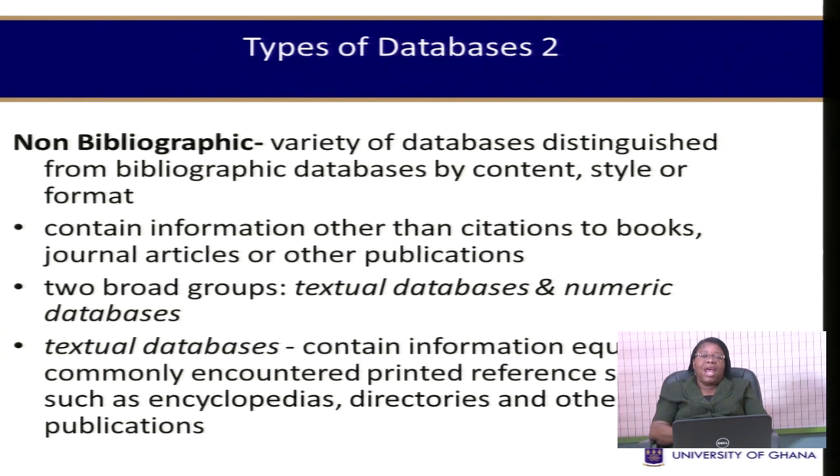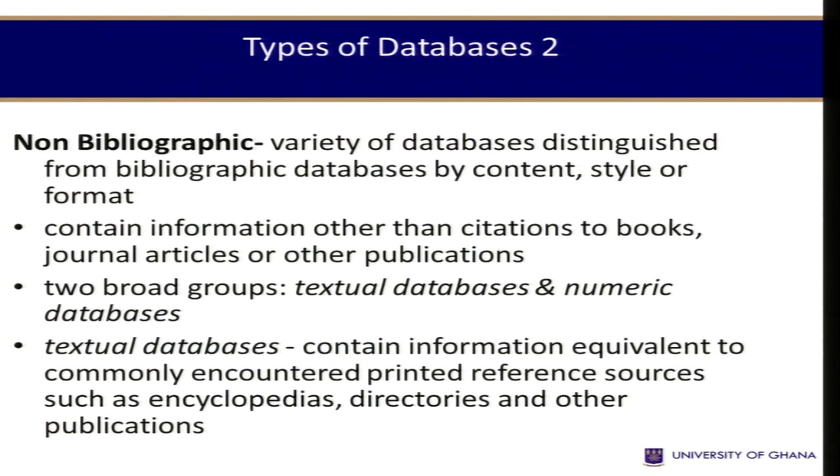A non-bibliographic database is a variety of databases distinguished from bibliographic databases by content, style, or format. It contains information other than just citations, providing detailed information. Two broad categories include textual databases—examples being University of Ghana online databases such as Emerald, JSTOR, and Blackwells—which provide the full text of materials.